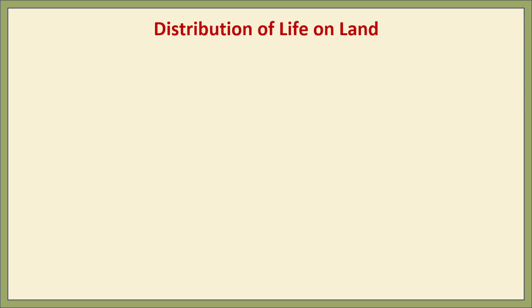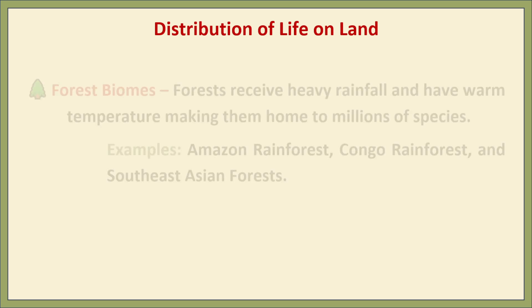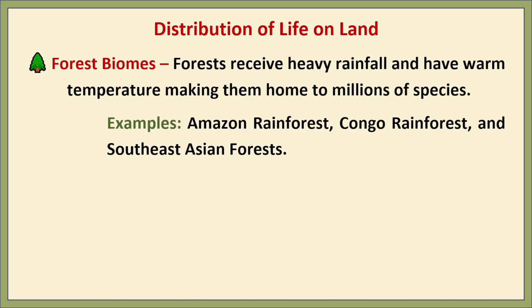Life on land varies based on climate, rainfall, and temperature. Forest biomes receive heavy rainfall and have a warm climate, making them rich in biodiversity — millions of species thrive from towering trees to tiny insects. Examples include the Amazon, Congo, and South Asian forests. Grasslands, found in regions with moderate rainfall, are dominated by grasses with very few trees and support herbivores like zebras, bison, and antelope — examples include Africa's savannah and the Eurasian steppes.